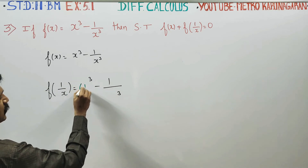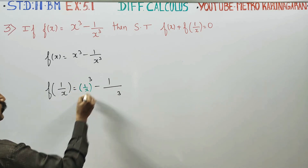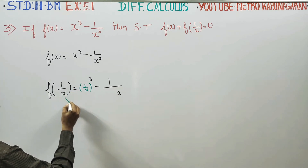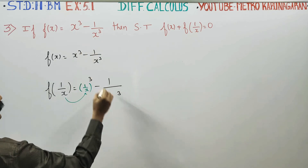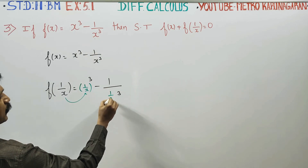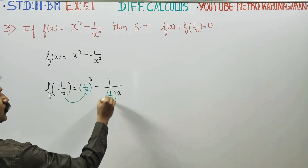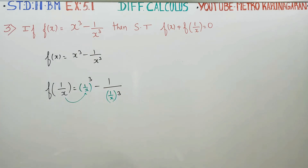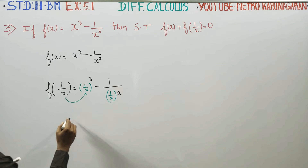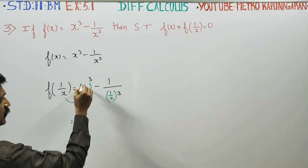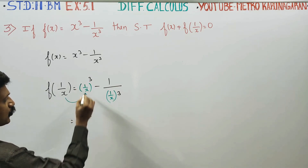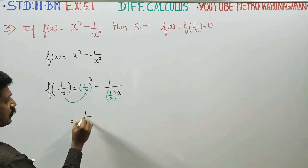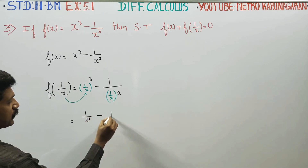In place of x, we put 1 by x. So in the cube, we put 1 by x. Inside the cube, 1 cube is 1, by x cube.